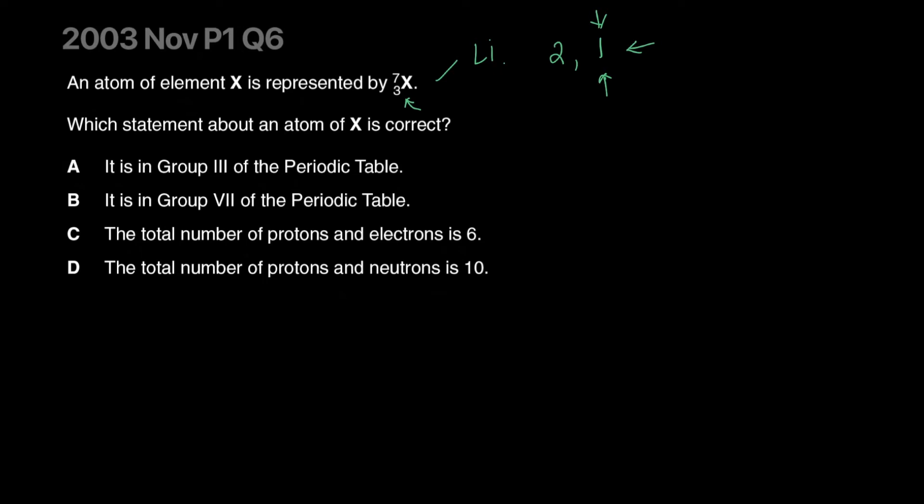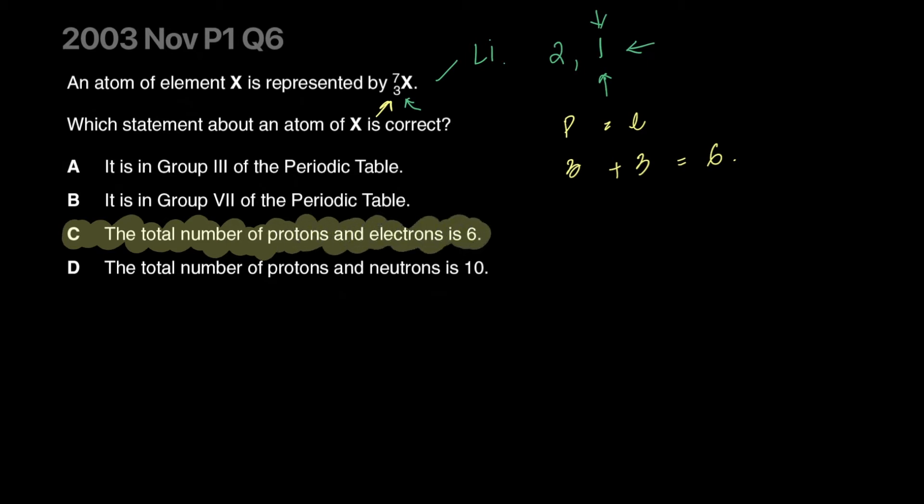A and B are out. The total number of protons and electrons is six. I know it has three protons because it just says three. If it has three protons, that should equal the number of electrons, which are three as well. I add them together and I get six. So the answer is C. The total number of protons and neutrons is ten would be true if it was, but it's not. The total number is actually given to us as a mass number. It's actually seven, not ten, because it has four neutrons. This added to those four makes it seven.